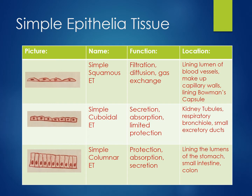A few general observational inferences can be made about this tissue. It is only one cell thick, so it will not be very strong and would only provide limited protection. However, because it is only one cell thick, it will allow materials to easily diffuse in and out. Due to this property, simple epithelia are excellent at facilitating secretion, absorption, and filtration.